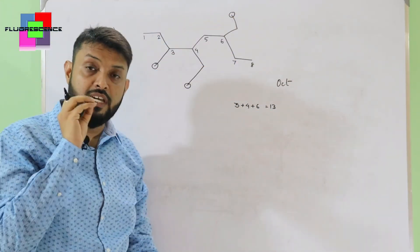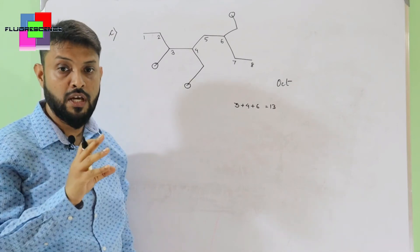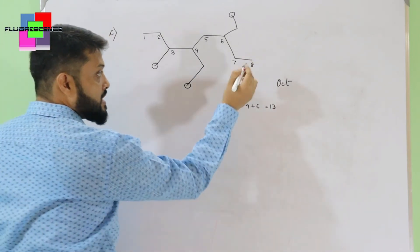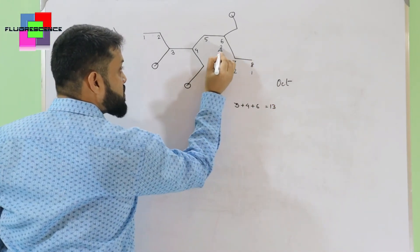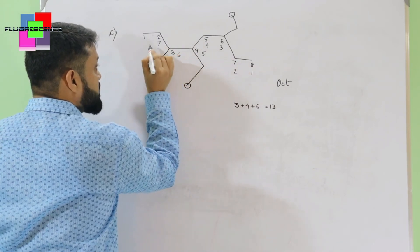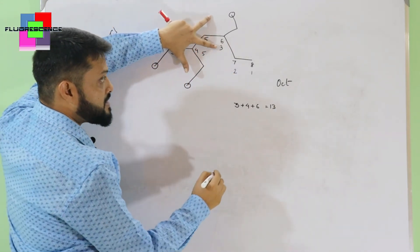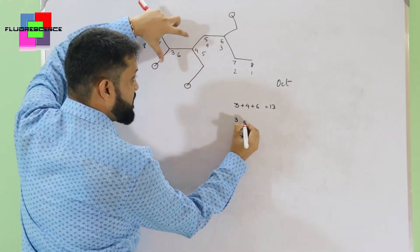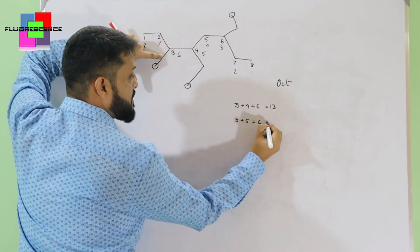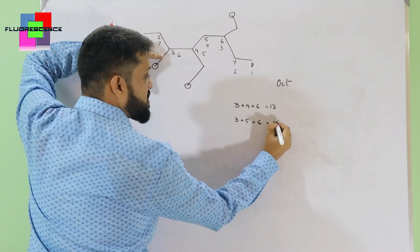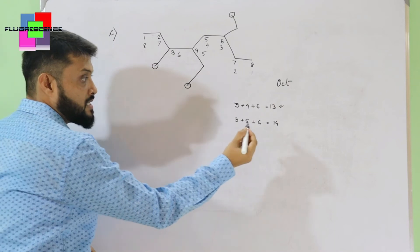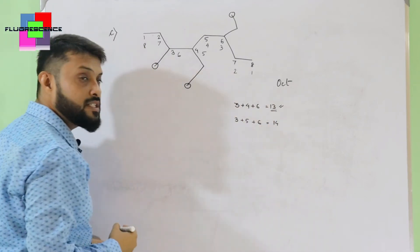Regardless of the nature of the substitution, just add the locants of all substitutions. If I start from the right side: the substitutions fall at positions 3, 5, and 6, giving a sum of 14. Since starting from the left gives the smaller sum (13 vs 14), we start from the left side.